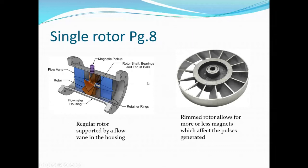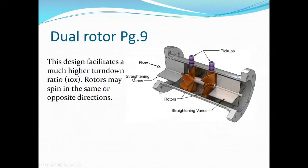The second rotor type is the dual rotor. The big benefit of the dual rotor is a much higher turndown ratio — a much wider operating range with maintained accuracy. Because these meters can be bidirectional, the rotors may spin in opposite directions depending on which way the flow goes, and may have opposing angles on the fins.